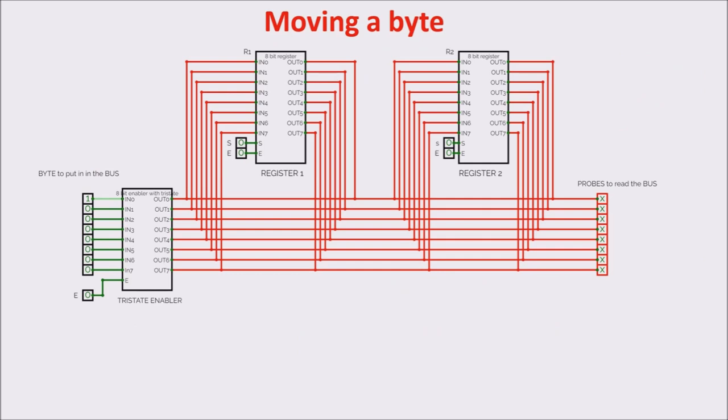We have first to switch on the enable of the first register. Secondly, switch on the set of the destination register. Then switch off the set of the destination register. And finally, switch off the enable of the first register.